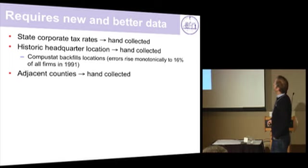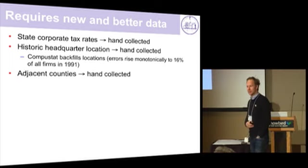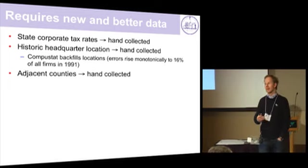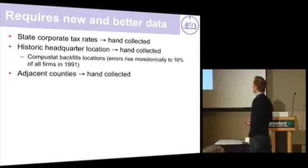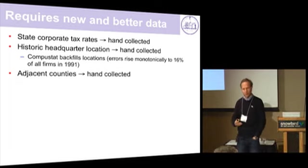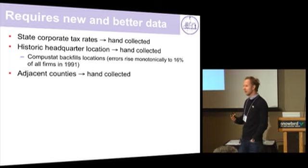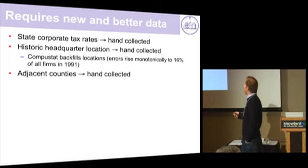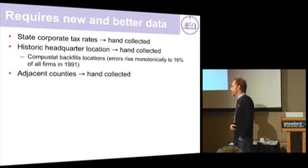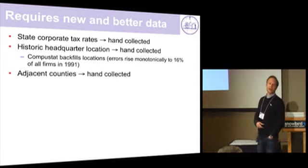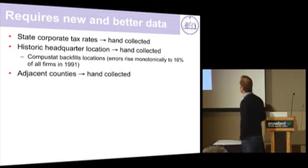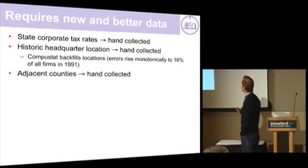So why hasn't this been done before? It seems maybe an obvious thing to do, but there are data issues. None of this is proprietary data, but you need to go out there and hand collect. Surprisingly, given that this is a big policy topic, whatever interest groups have on state corporate taxation is close to useless, as we figured out unfortunately. That threw us back quite a bit. So you actually have to go back to the original tax statutes to the extent that you can find them and really go out and see what the events have been.